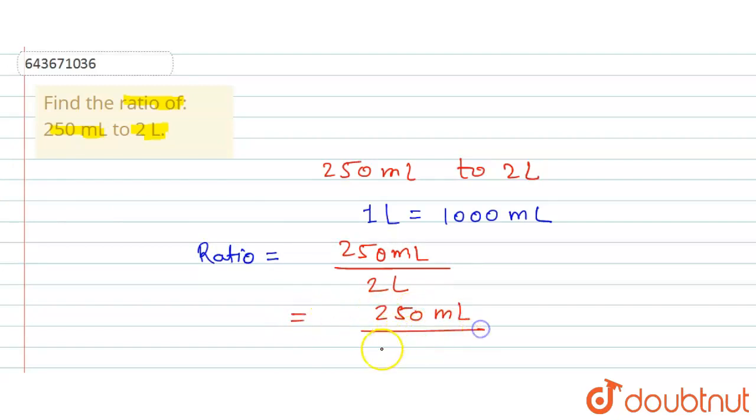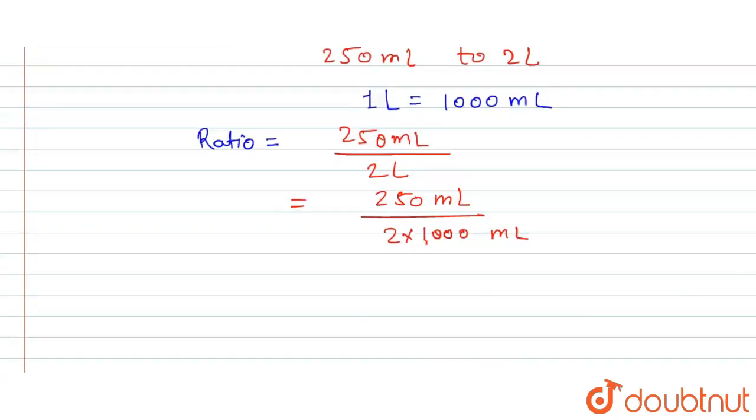Here 1 liter is equal to 1000 milliliters, so we will multiply by 1000. This changes into milliliters. Now we will find the ratio—we need to change into one unit.